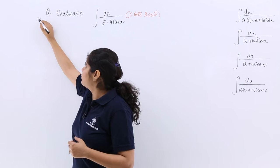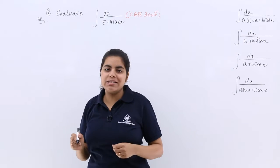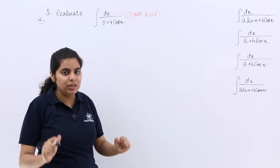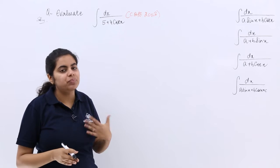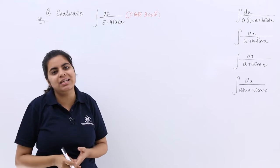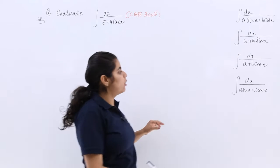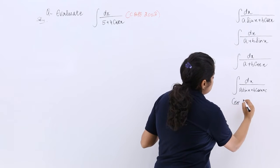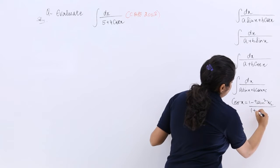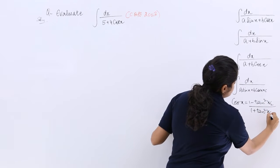Let me write the solution and let's start. How to do it? The procedure is simply: replace cos(x) by (1 - tan²(x/2))/(1 + tan²(x/2)). You know this formula. I am writing the formula here: cos(x) = (1 - tan²(x/2))/(1 + tan²(x/2)).